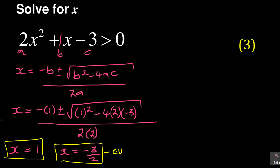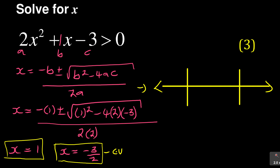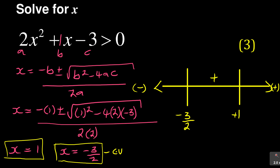You need to know how these critical values are interpreted on a number line. So part of the working requires you to draw a number line. On the number line we place negative 3 over 2 and positive 1, with zero in between. The number line increases to the right and decreases to the left. I need to test values to determine where the expression is positive and where it is negative.